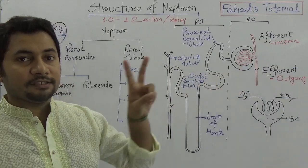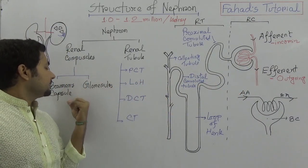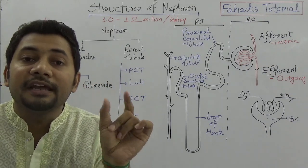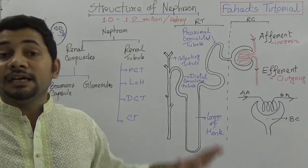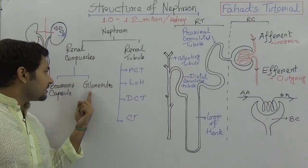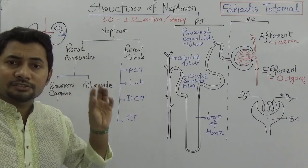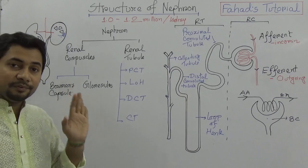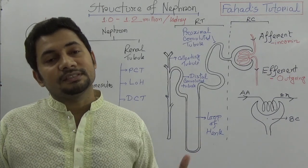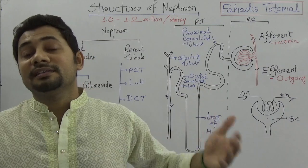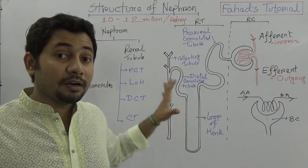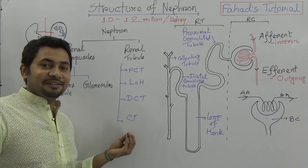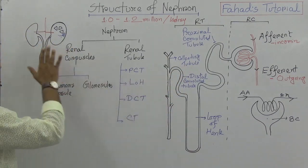You must know that the renal corpuscle has only two parts: the glomerulus and Bowman's capsule. I am just introducing the names here, but inside there is a lot more information regarding each part — the functions, structure, diameter, and length. I am not explaining all of that right now because this is SSC and O-level. When I explain A-level, I shall cover those details in depth.